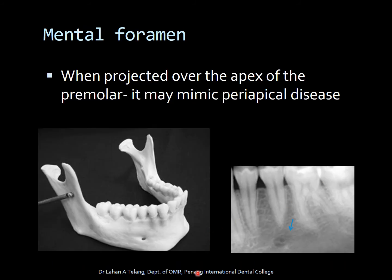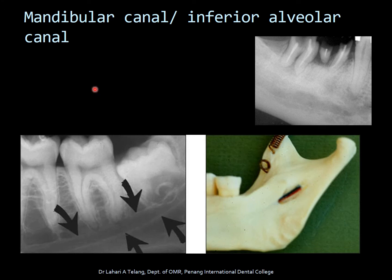The mental foramen is an important landmark — this is where the inferior alveolar canal exits with nerve endings. When projected over the apex of the premolar region, it may mimic periapical disease, so it is important to note that it is seen somewhere between the premolars, sometimes in very close proximity to the apex of the premolar in the mandibular premolar region. The mandibular canal, also called the inferior alveolar canal, is where the inferior alveolar nerve passes through. It is an important landmark, especially when placing an implant.